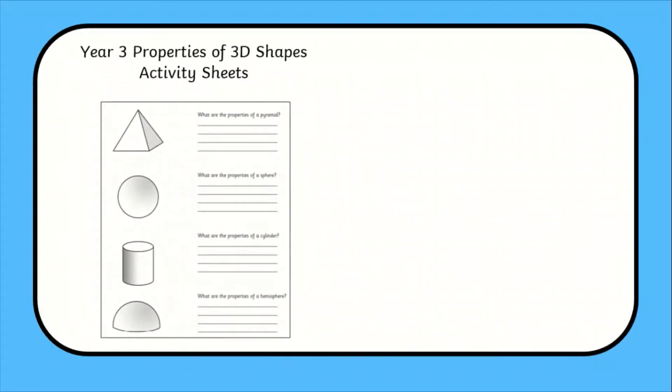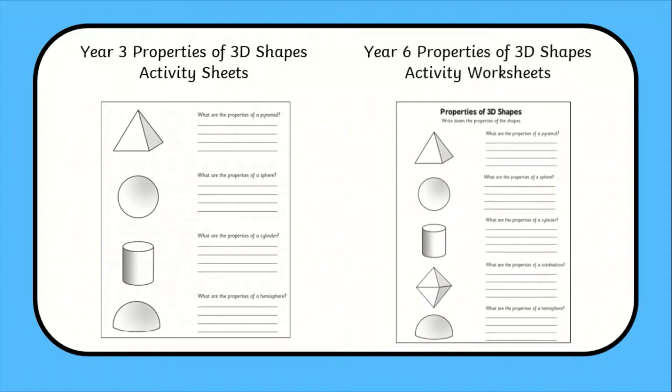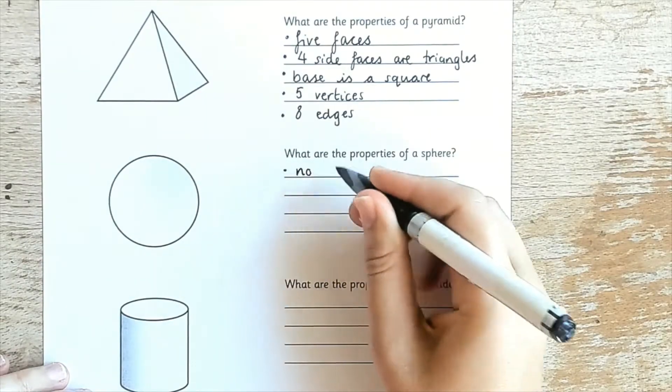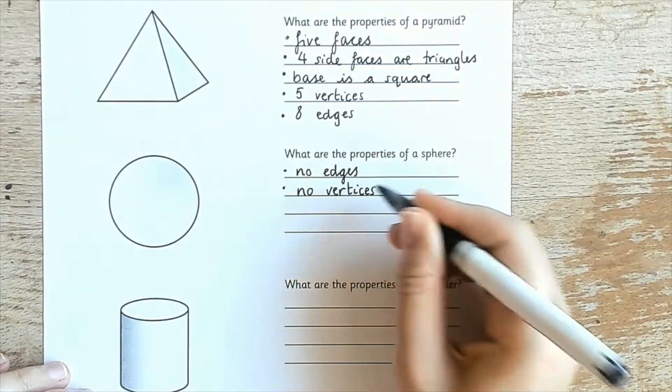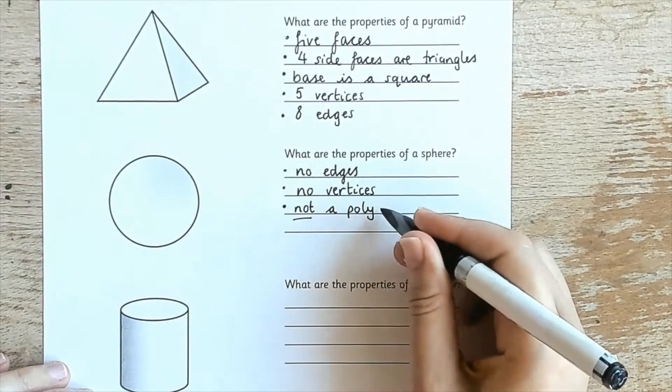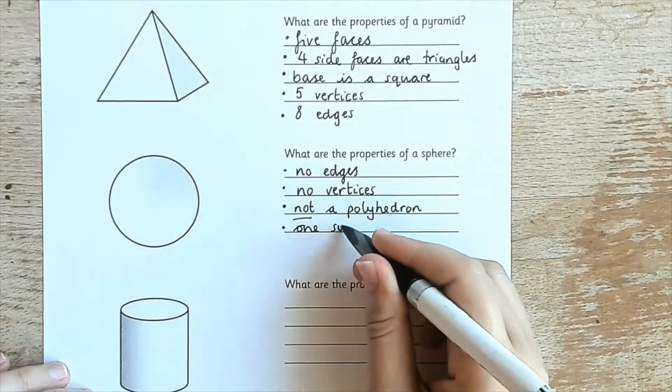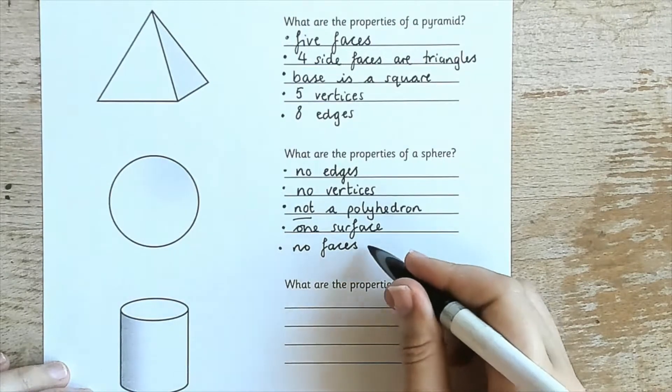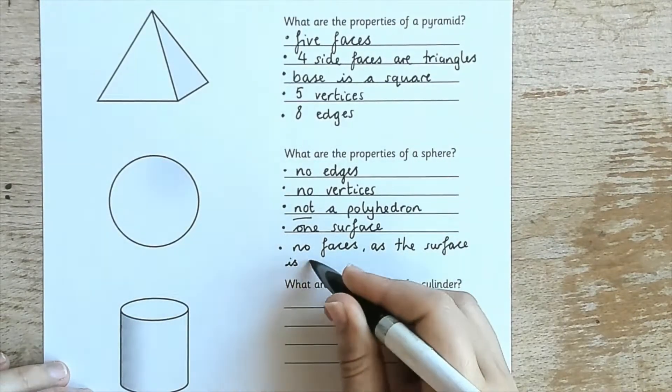First up we have these properties of 3D shapes activities. Learners are given a diagram and the name of a 3D shape. They must recall and write down all of the properties of that 3D shape. This would be a great activity to try at the end of a block of 3D shape learning.